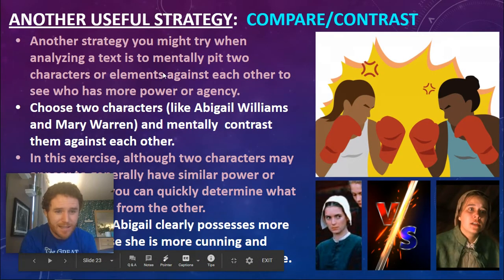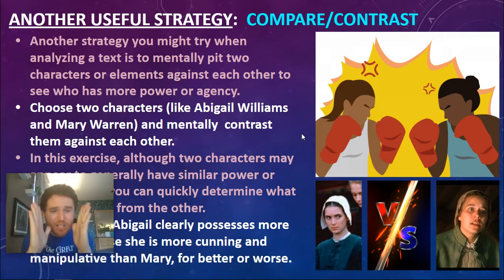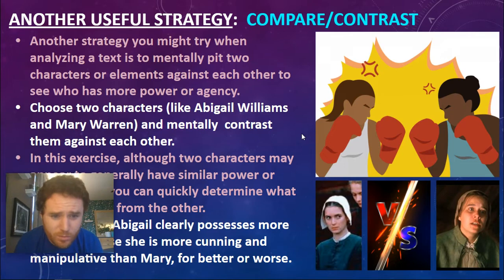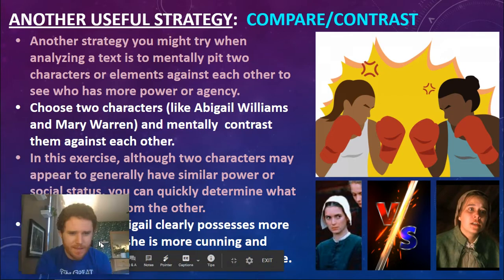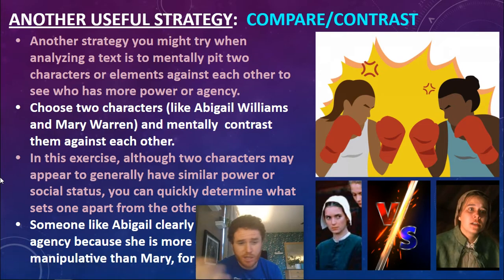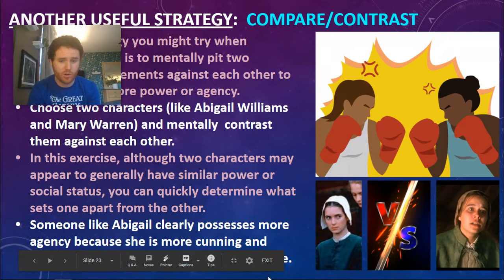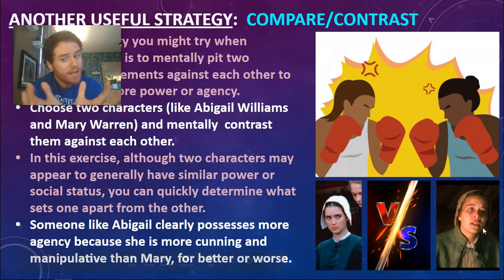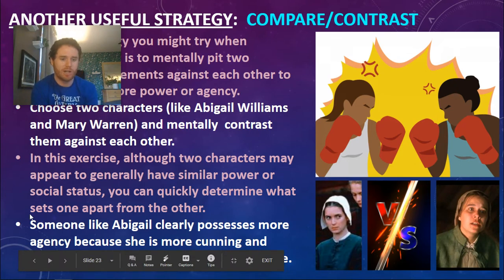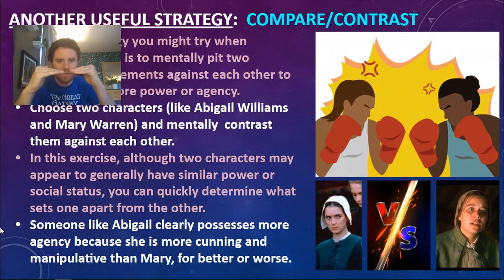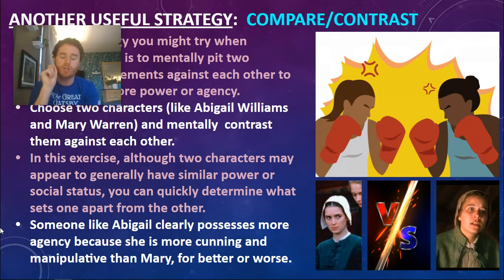Another strategy: mentally pit two characters or elements against each other to see who has more agency. Choose two characters like Abigail Williams and Mary Warren from The Crucible. Although both are teenage girls in Salem, Massachusetts in 1692 with seemingly similar social status, you can quickly determine what sets one apart. One of them worked for John Proctor, one used to. One has influence over John — and it's not Mary anymore. Someone like Abigail clearly possesses more agency because she is more cunning and manipulative than Mary.